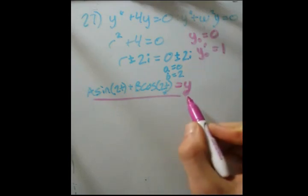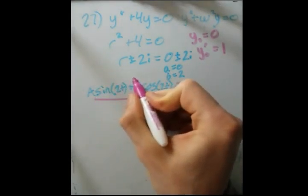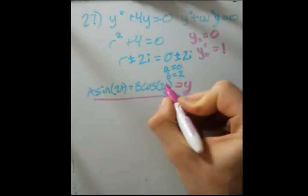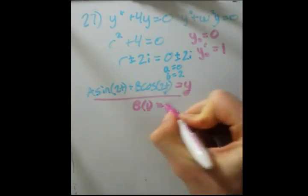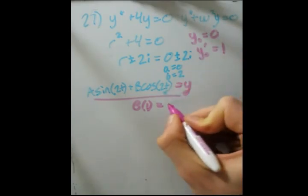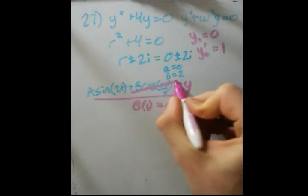So now, if we plug in 0, we should get 0. So let's plug in 0. If I plug it in here, this whole term goes away. Sine of 0 is 0. Cosine of 0 is 1. So b times 1 is equal to y at 0, which is 0. So b equals 0.